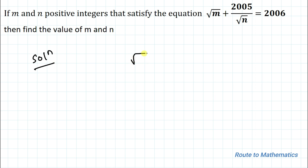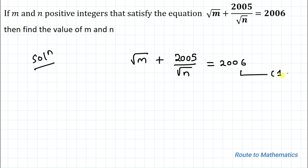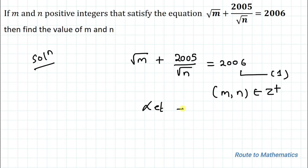Without any delay, let's start the solution. We have (√m + 2005) / √n = 2006 — let's call this equation 1. In order to satisfy equation 1, the value of n must be such that it completely divides 2005. Let's consider that number to be k, where k·√n = 2005 and k is any factor of 2005.